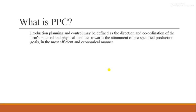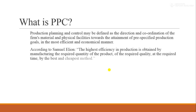Production Planning and Control may be defined as the direction and coordination of the firm's material and physical facilities towards the attainment of pre-specified production goals in the most efficient and economical manner. According to Samuel Elian, the highest efficiency in production is obtained by manufacturing the required quantity of the product at the required quality, at the required time, by the best and cheapest method.